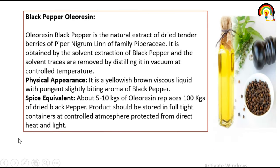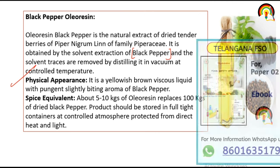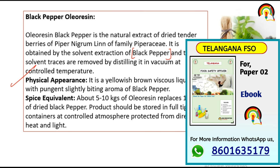Black pepper oleoresin is the natural extract of dried tender berries of Piper nigrum, family Piperaceae. It is obtained by solvent extraction of black pepper, and solvent traces are removed by distilling in vacuum at a controlled temperature. The physical appearance is a yellowish-brown viscous liquid with a pungent, slightly biting aroma. In terms of spice equivalent, 5 to 10 kg of oleoresin replaces 100 kg of dried black pepper, and the product should be stored in airtight containers at a controlled atmosphere, protected from direct heat and light.